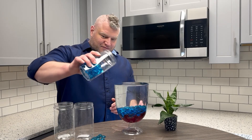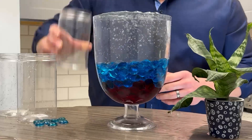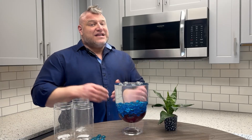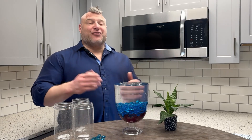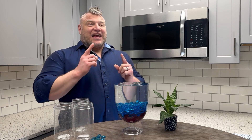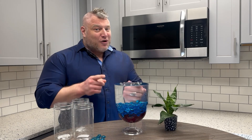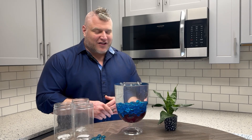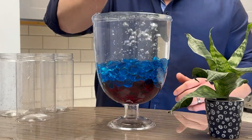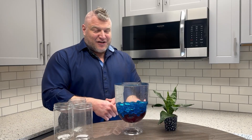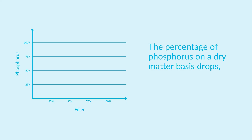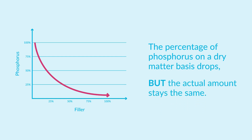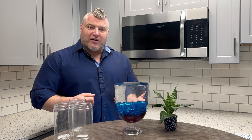More powdered cellulose — the percentage is now 33%. Notice a couple of things happening here: every time I add powdered cellulose, the percentage of phosphorus on a dry matter basis drops, but the actual amount stays the same. Also, every time I add the filler, we lose water.